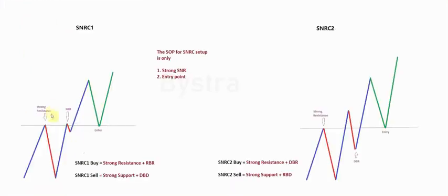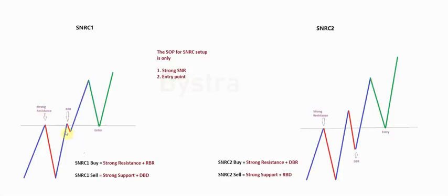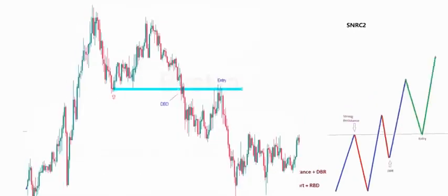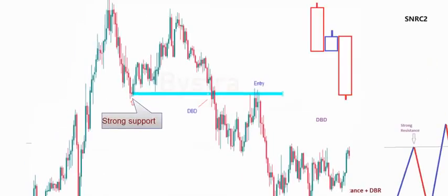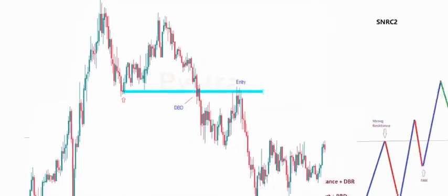Remember, all the strong resistance and rally-based rally must be on the same line. This one cannot be on top, this one cannot be too low. And for SNR-C1 sell, there must be strong support and drop-based drop. The standard operating procedure is still the same.